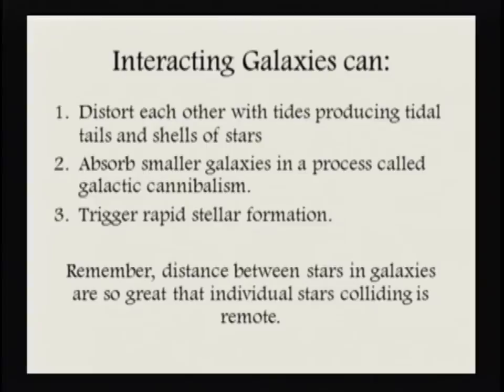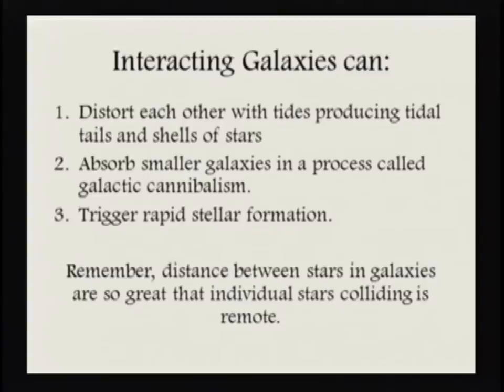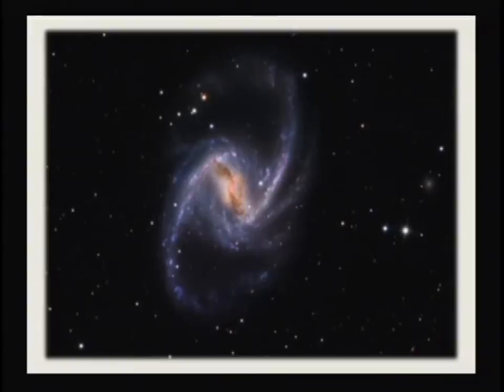When these galaxies interact, they can certainly trigger rapid stellar formation. I'll show you some galaxies where it's just stellar formation happening all over the place — simply because of the condensation of gas and dust in big dark clouds forming stars. When we talk about distances between stars in galaxies, they are so great that unless you took a direct hit core-on-core, you're really never going to have individual stars colliding. The odds are astronomical. Even within that, those distances are probably great enough it won't be an issue.